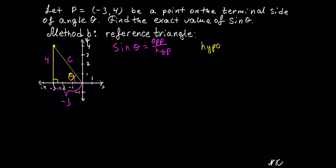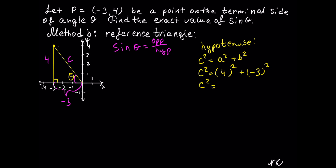Let's calculate the hypotenuse of this right triangle using c squared equals a squared plus b squared. We have c squared equal to 4 squared plus negative 3 squared. That gives us c squared equal to 16 plus 9, which is 25. To solve for c, we take the square root of both sides. Square root and the second power cancel, and we get c equal to square root of 25, which is 5. So the hypotenuse is 5.